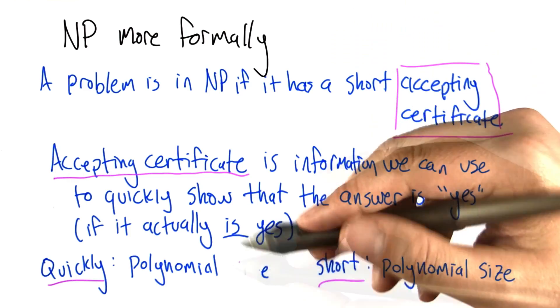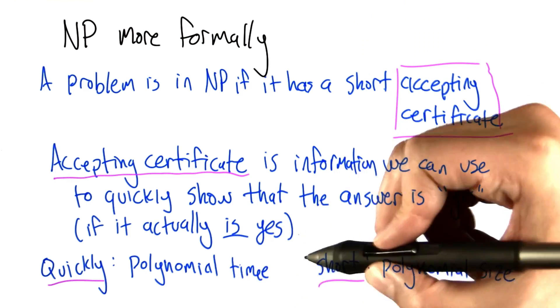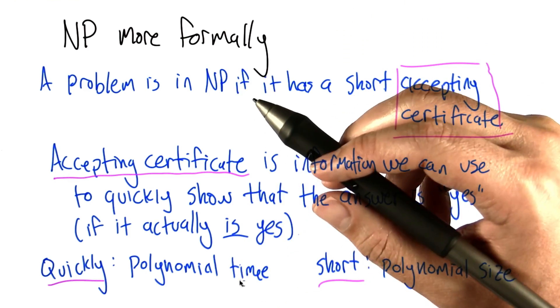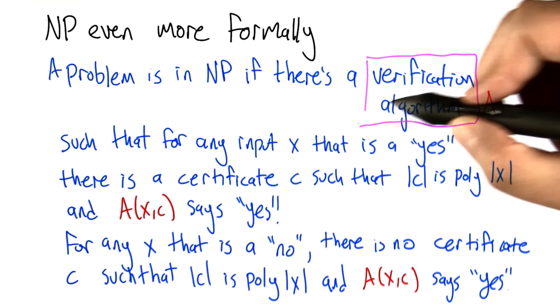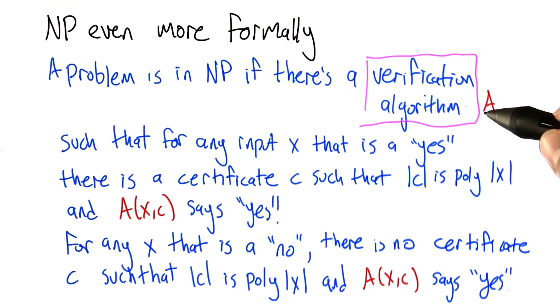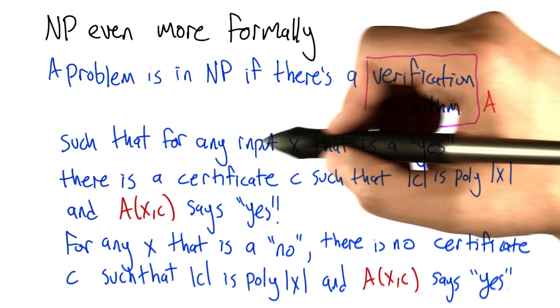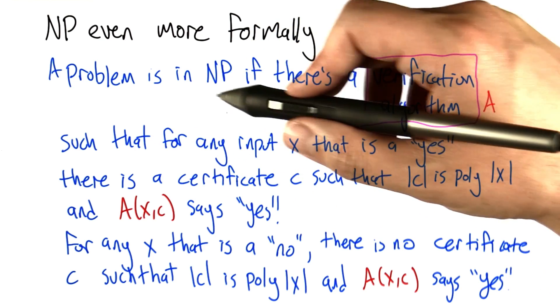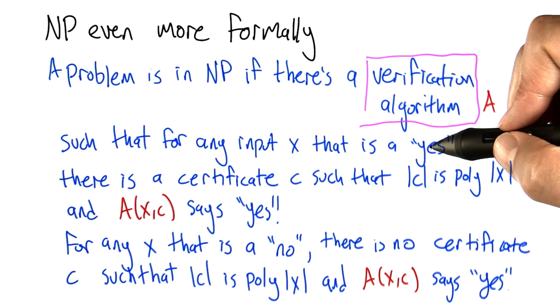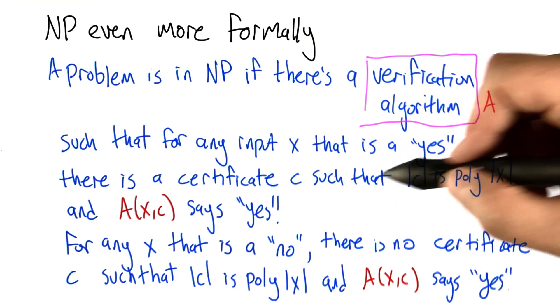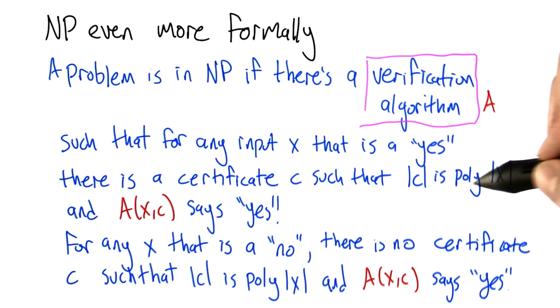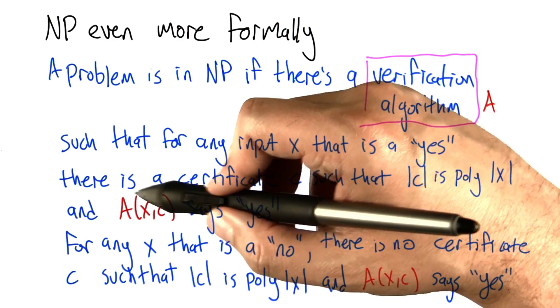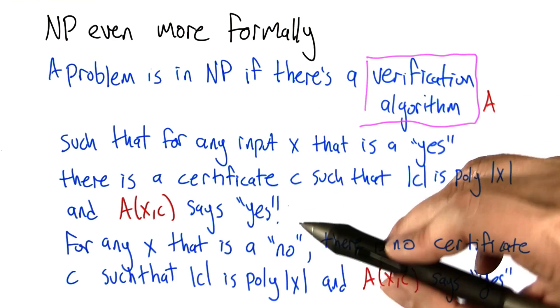a problem is in NP if there is a verification algorithm A, such that for any input X that is a yes, there is a certificate C such that the size of C is polynomial in the size of X and the verification algorithm A says yes.